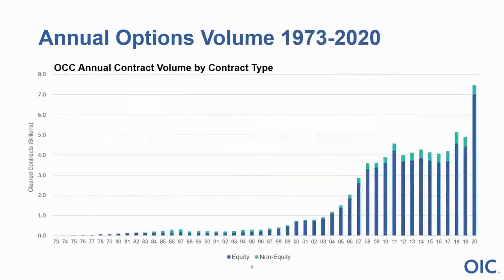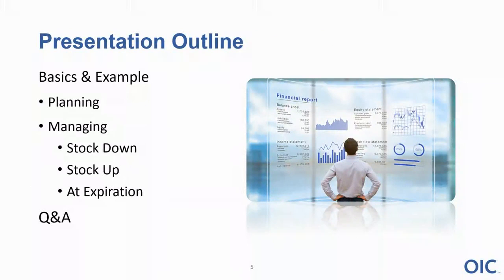Options volume recently is at record levels. In 2020, options traded over 7 billion contracts. The record volume for a single day was just over 60 million, and in 2021 we are averaging over 30 million option contracts a day. The product itself is attracting a lot of new interest. Speaking of the options product, let's get into one of the most popular options strategies there is: the covered call.